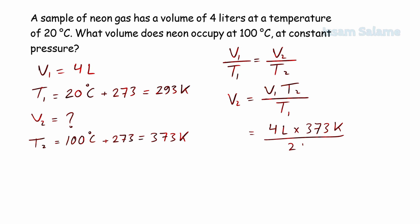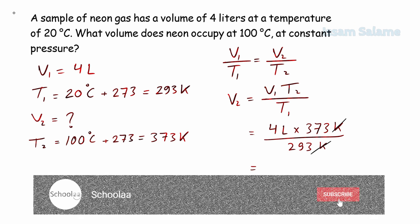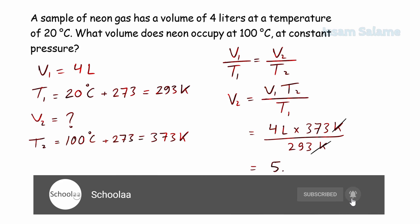We replace the variables by their values. We cancel the similar units between numerators and denominators. Then we find the answer, 5.1 liters.